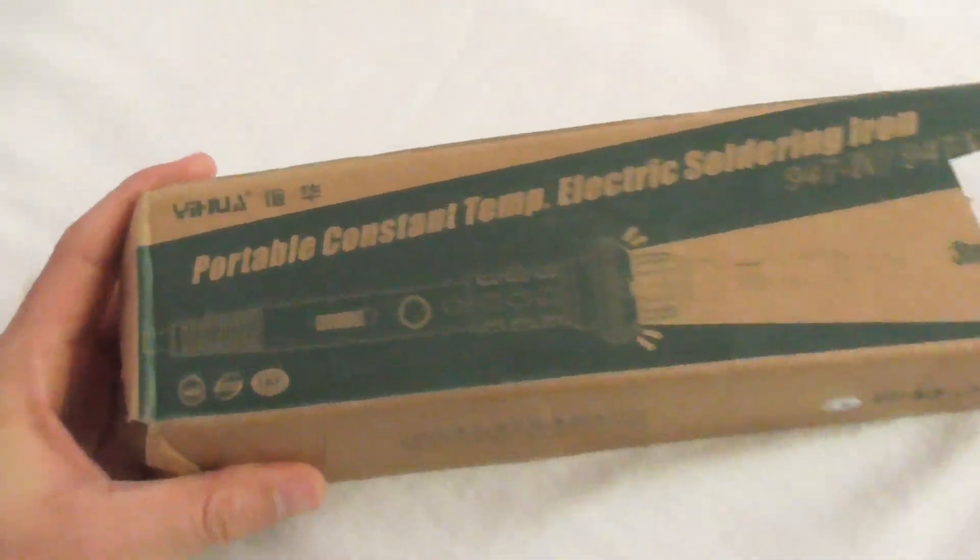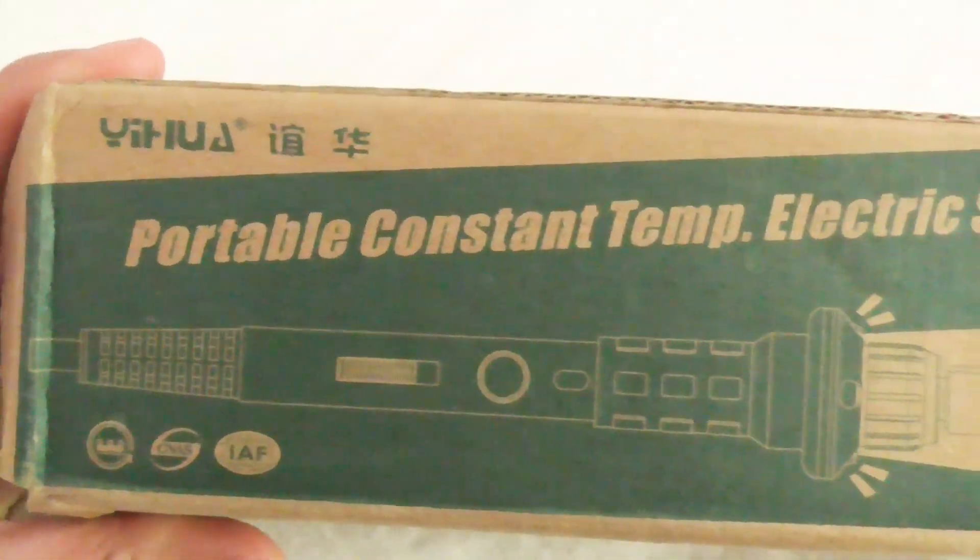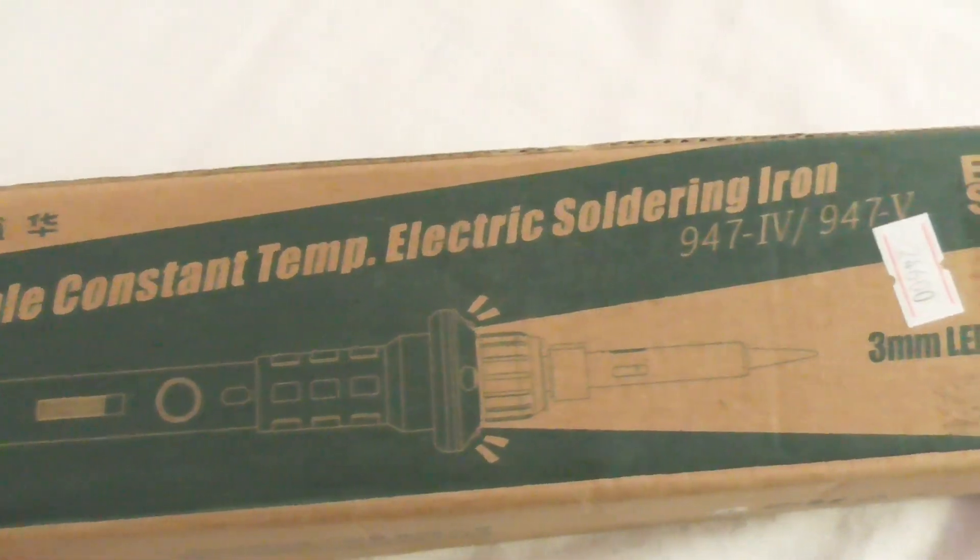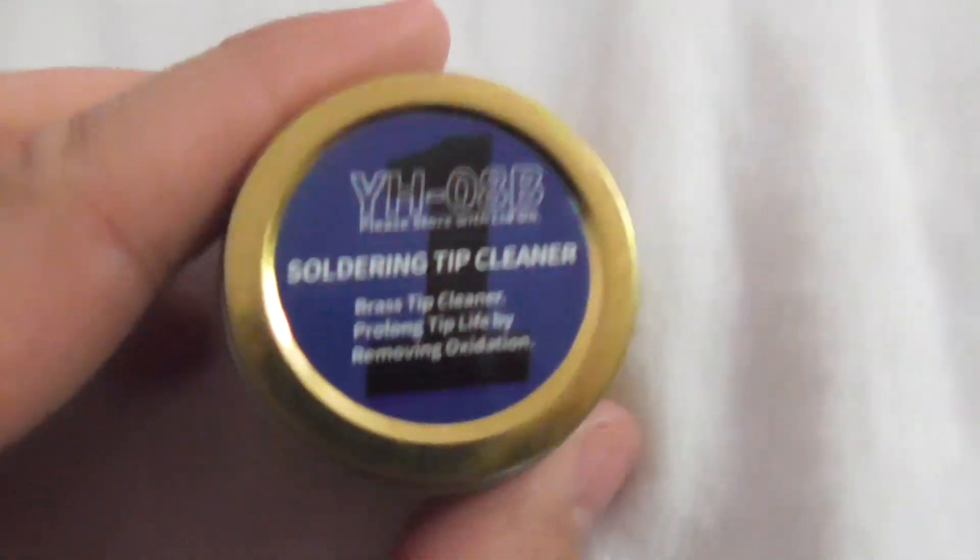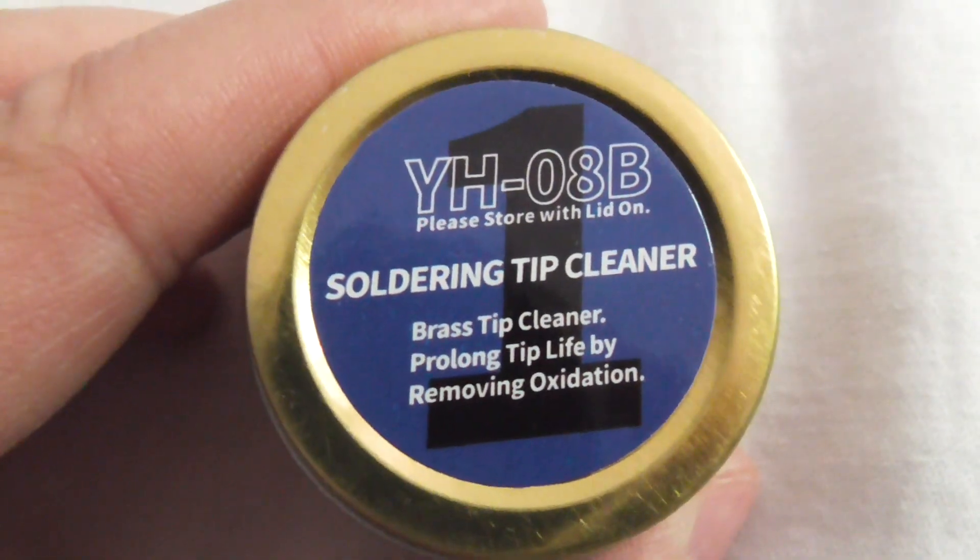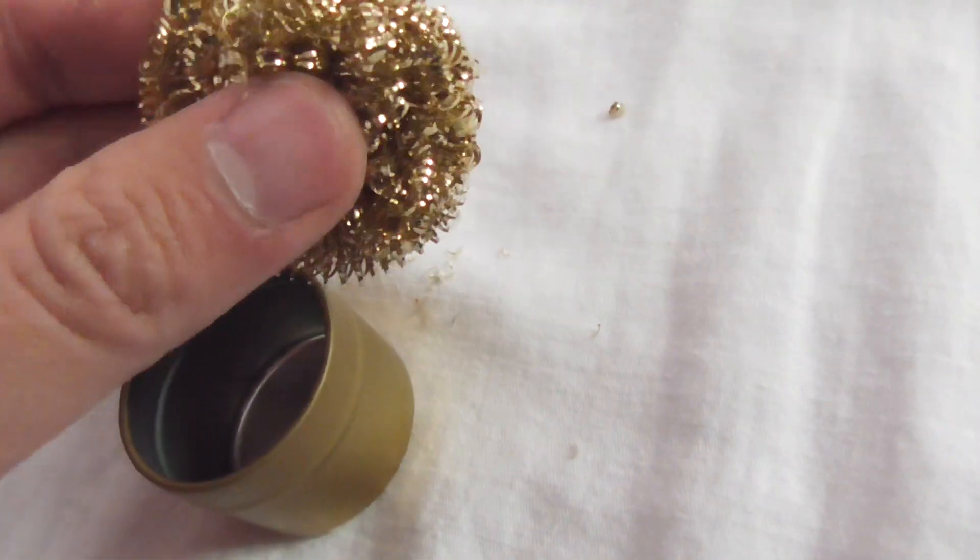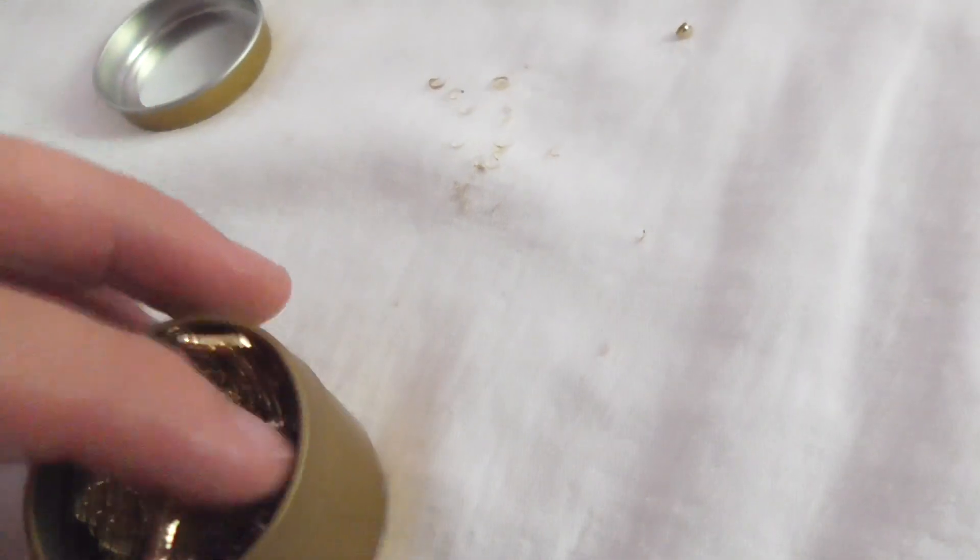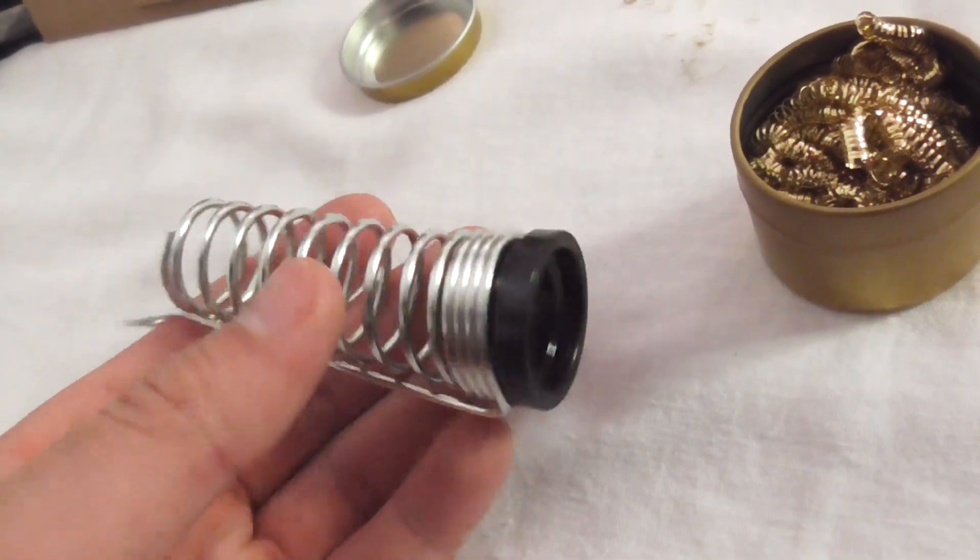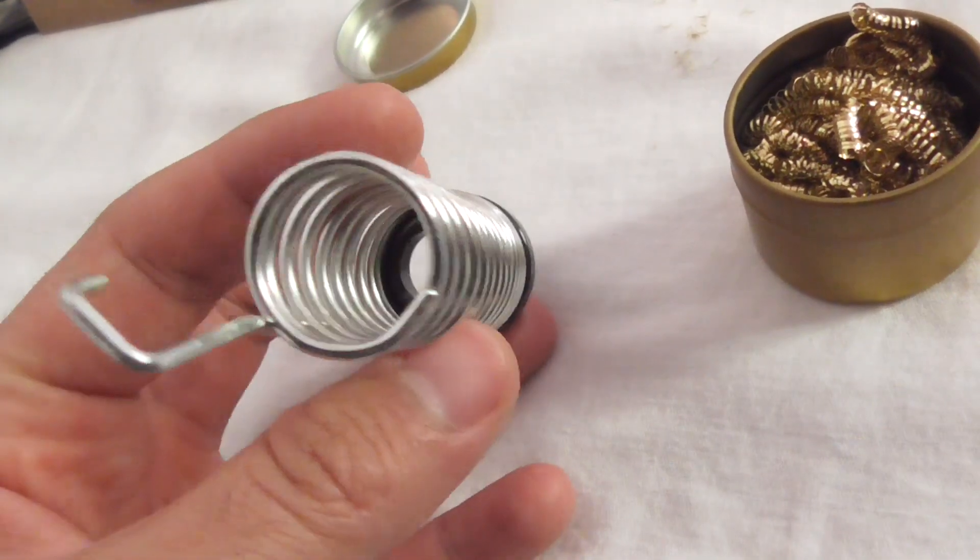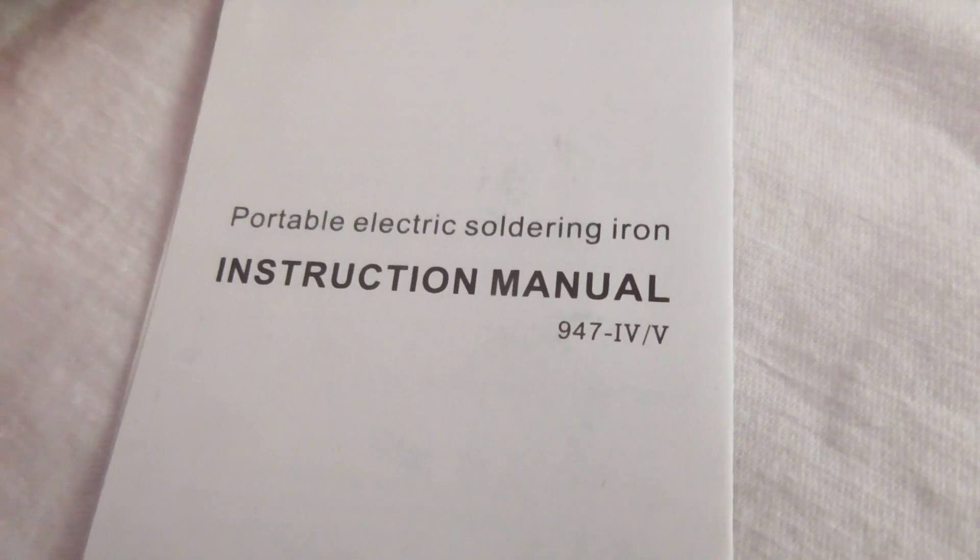So here's a soldering iron. It says portable constant temperature electric soldering iron, 3 millimeter, LED lamp. That's for cleaning the soldering tip. That's for holding the soldering tip, just protecting the tip of the soldering iron from burning something. We have an instruction manual.